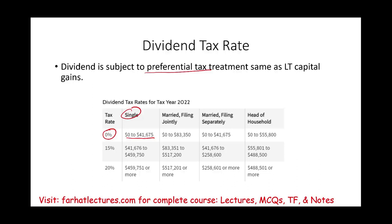If you happen to be filing as single — and this is for tax year 2022, which could change in another year — and your taxable income is between $0 and $41,675, your tax rate is zero, meaning you don't pay any taxes on dividends. However, if you're married filing jointly, they give you more room: your taxable income could be up to $83,350 and you pay zero taxes.